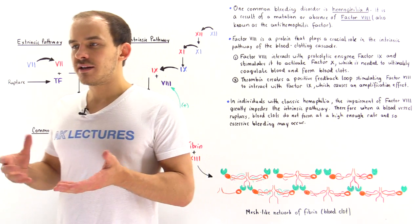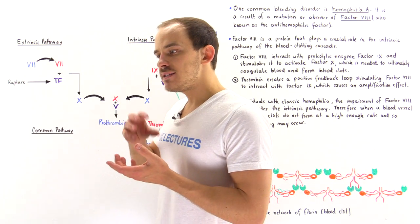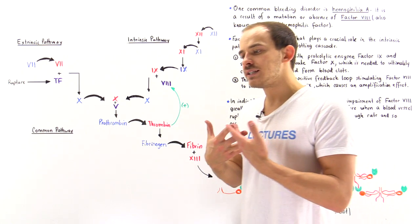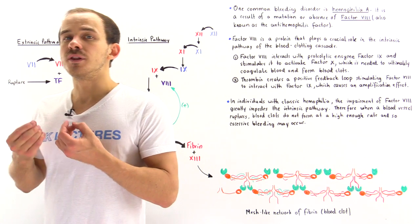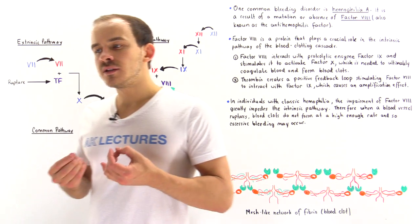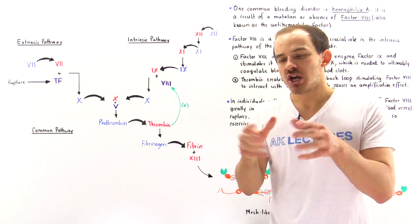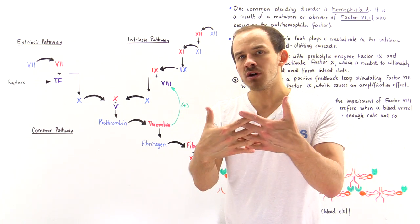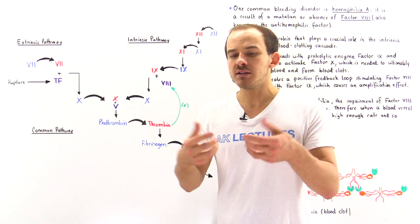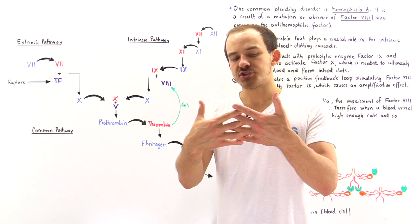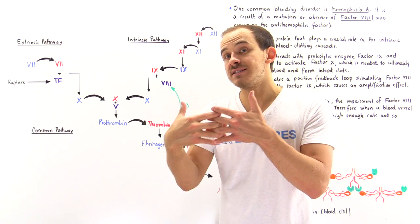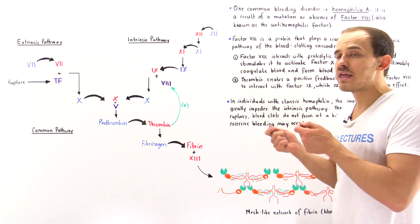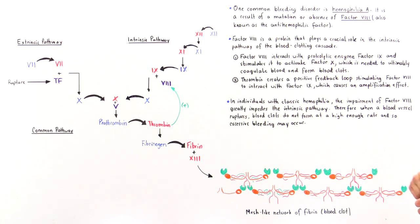The blood clotting cascade consists of many proteins and enzymes that work together to coordinate the formation of blood clots. These blood clots are mesh-like networks of fibrin molecules that ultimately form the clots, which can coagulate and seal off that rupture or cut, preventing the leakage of blood out of that blood vessel and into the surrounding tissue.